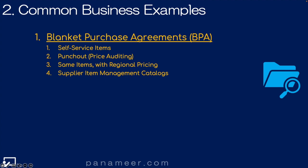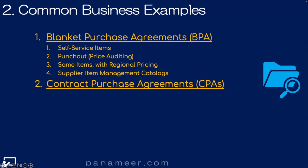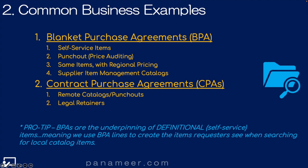And then there's the supplier item management catalog — if you want to create a BPA and have your supplier manage the changes to those items, they can do it through the portal. For contract purchase agreements, examples include remote catalogs or punch-outs, which is a global or wide-open agreement, and legal retainers — large service retainers where you use the same contract for every requisition PO. Pro tip: BPAs are the underpinning of definitional or self-service items, meaning we use the BPA lines to create the items requesters see when they search for local catalog items.